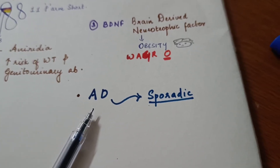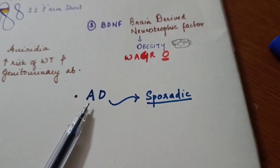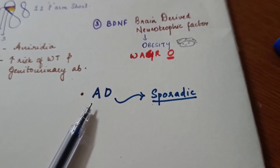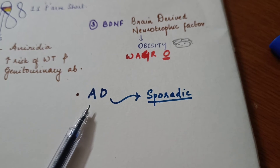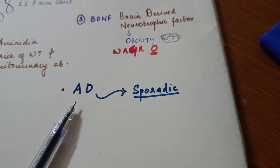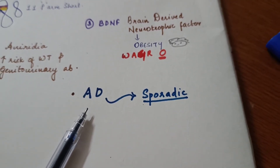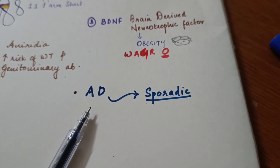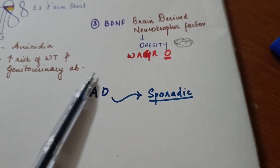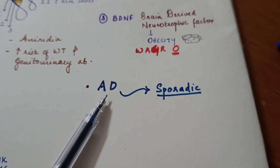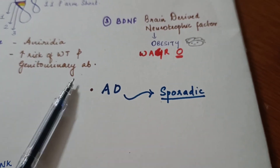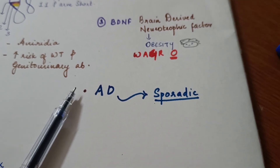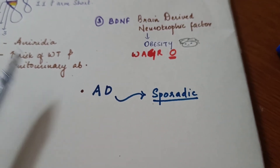WAGR syndrome is technically autosomal dominant, but it is often sporadic — meaning it arises from a new mutation rather than being inherited from a parent.